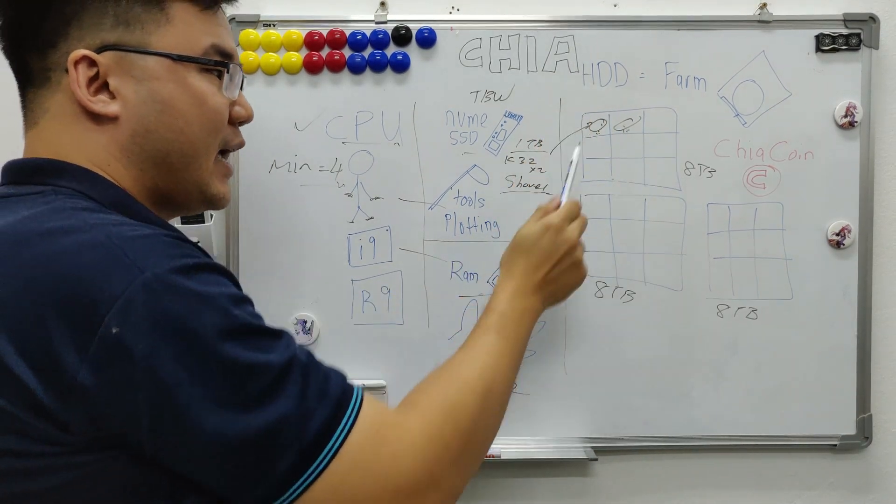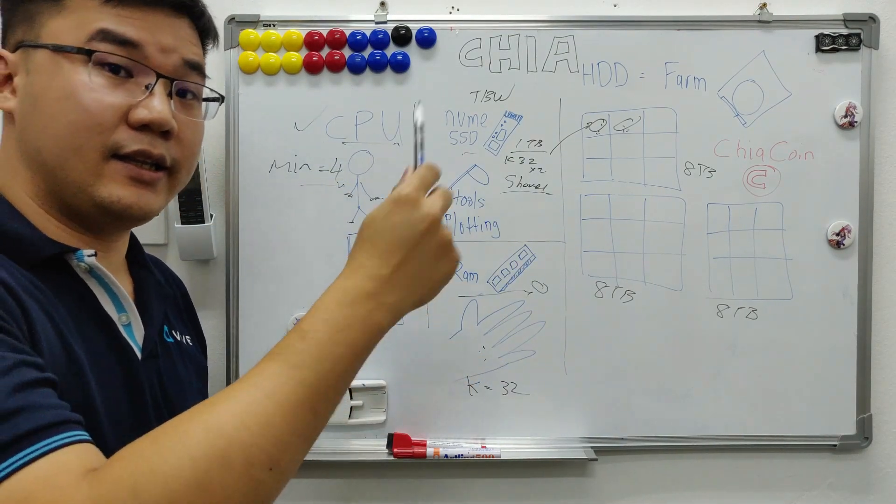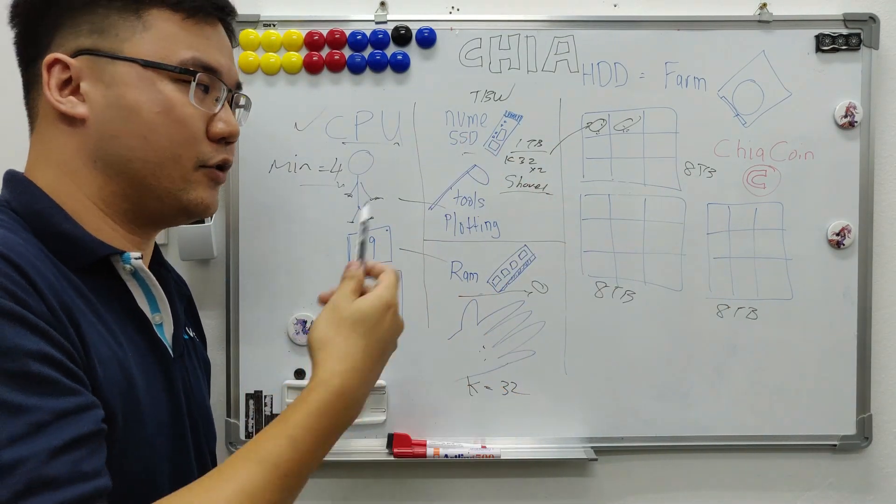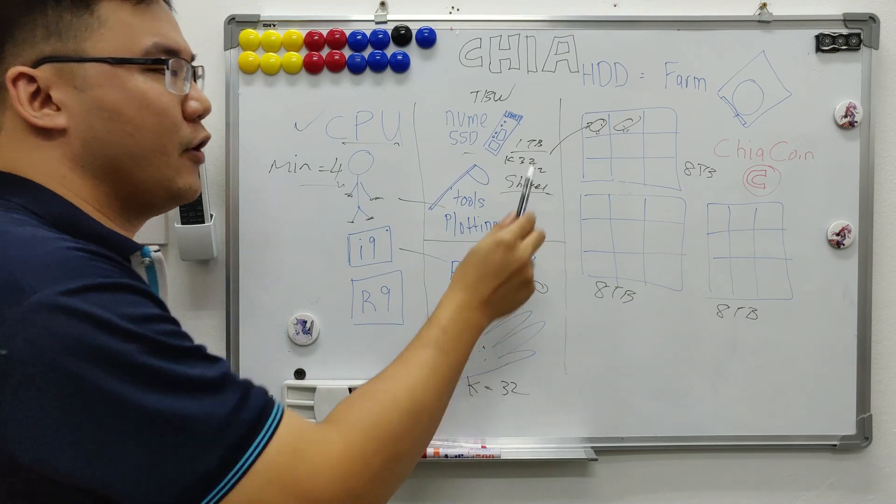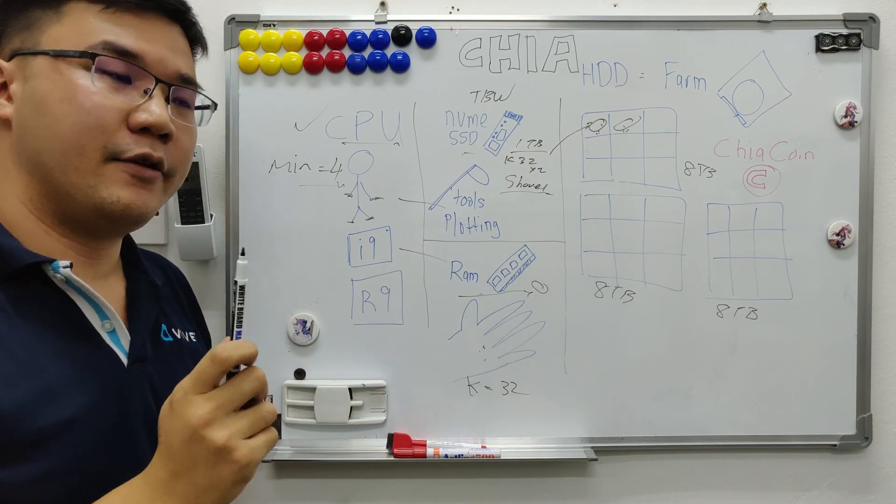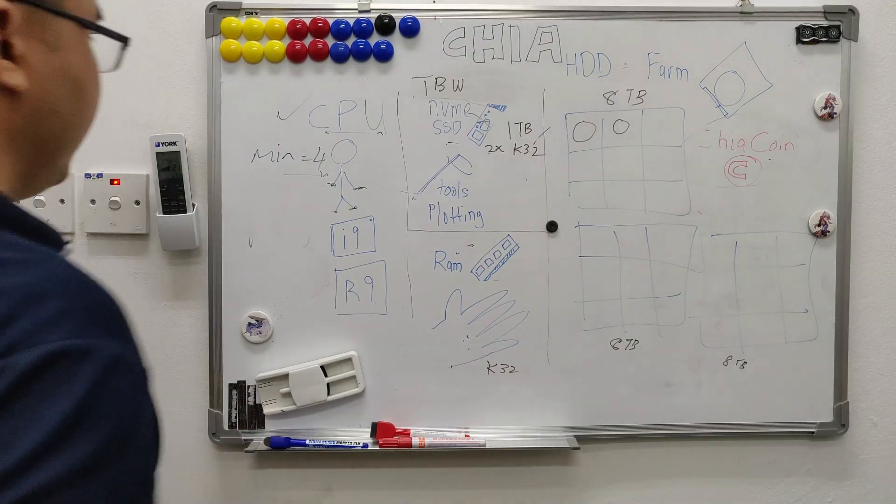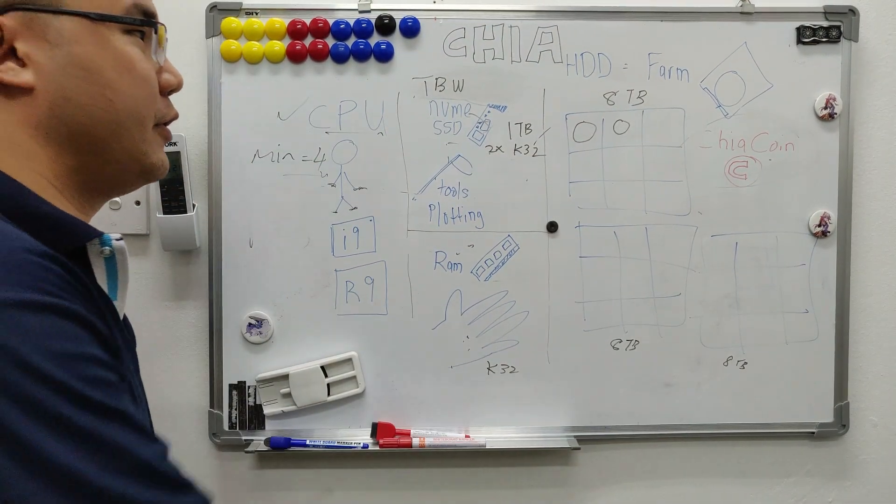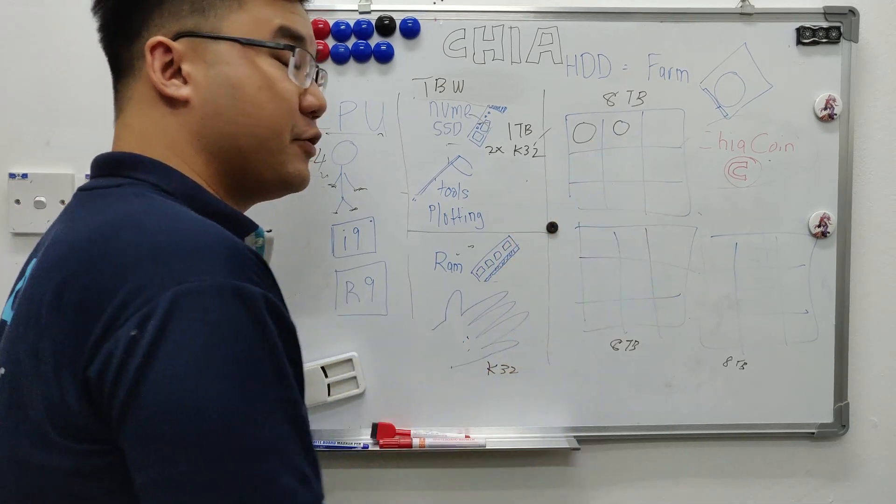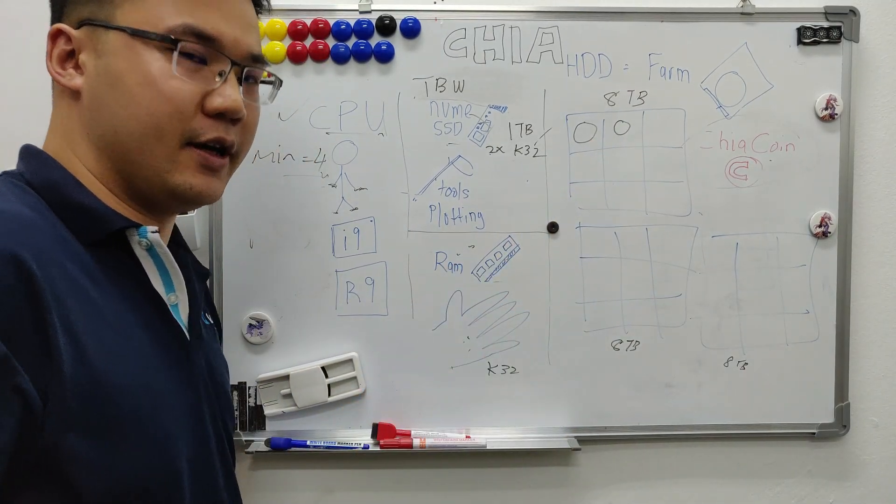So these 2 plots will be ready to receive a Chia coin. It will be sent to challenge, to challenge the internet, everyone in the world to challenge. And if your plot of land is suitable for the latest Chia coin, it will receive a Chia coin.